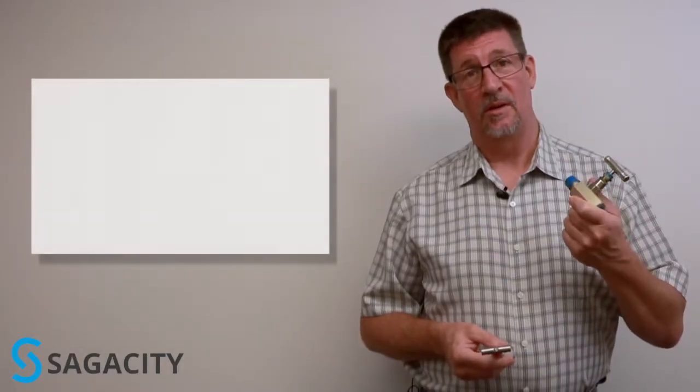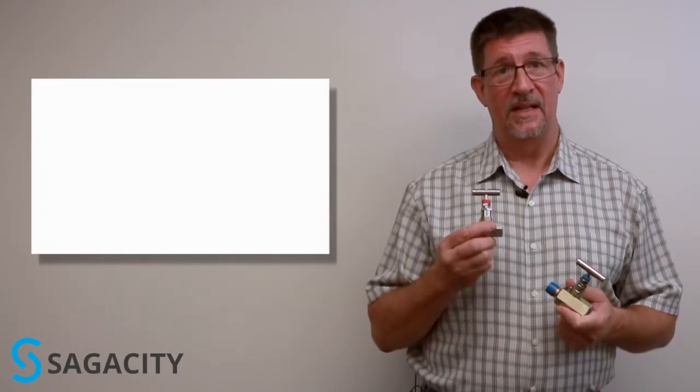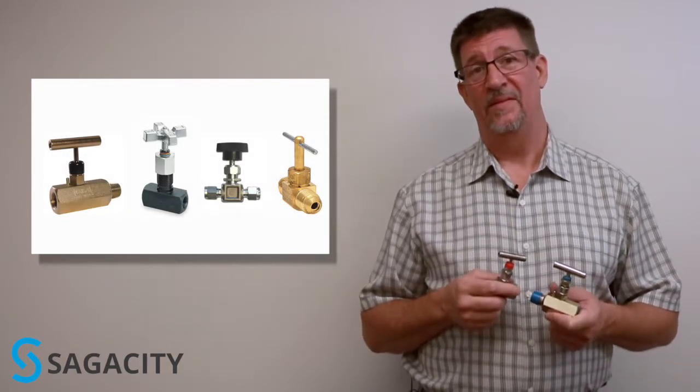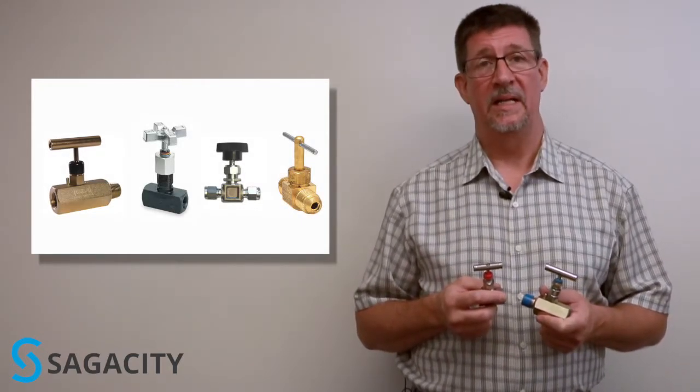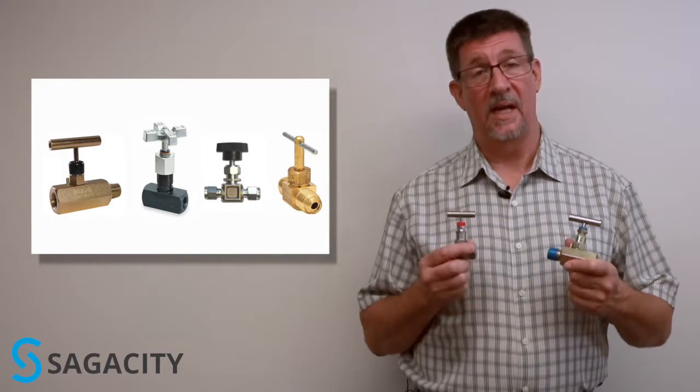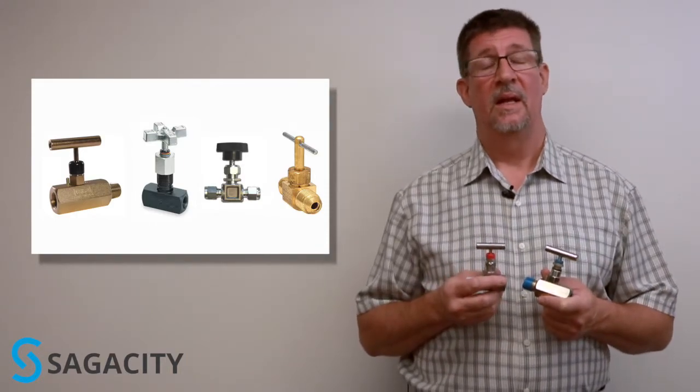This particular one is carbon steel, this one's stainless steel, and they can be any material, even exotics like hastelloy or titanium. We're going to talk a little bit about the different types of needle valves that are out there and how to specify them.